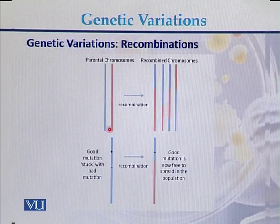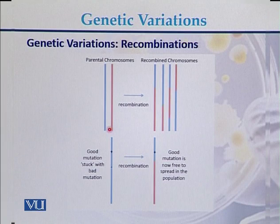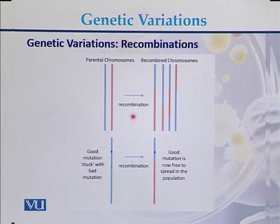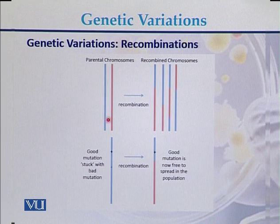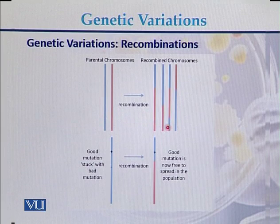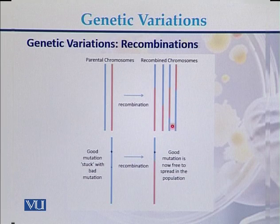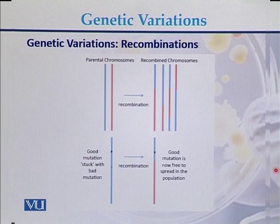Recombination is a process usually seen during meiosis, where chromosomes change their fragments. Chromosomes in the form of sister chromatids or non-homologous chromosomes can exchange fragments due to recombination, which occurs even during cell division.